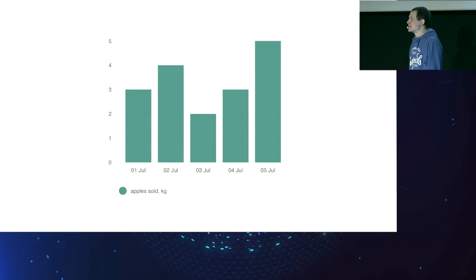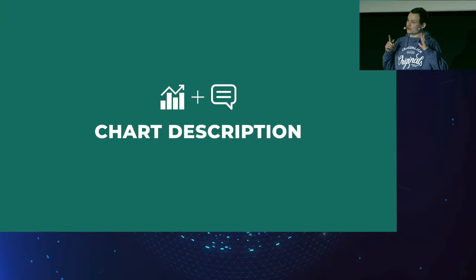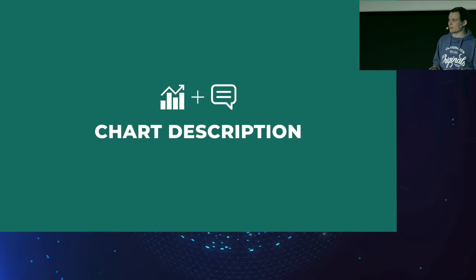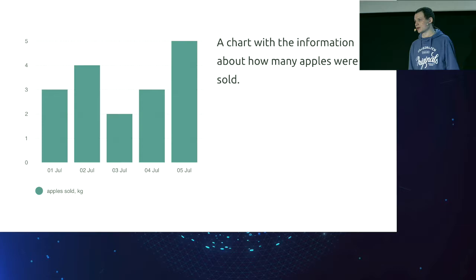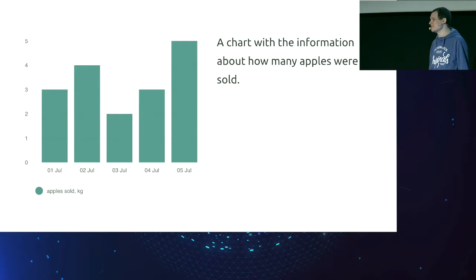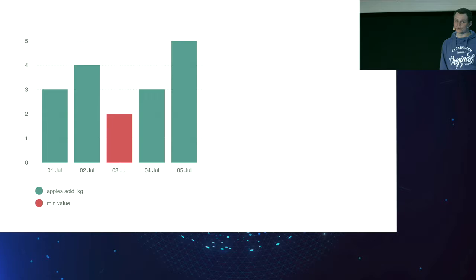Our first statistics will probably look like that — just a chart showing how many kilograms of apples we sold every day in this time period. Now let's try to make this chart accessible. The first way is to consider a chart as an image. We'll add a description to the whole chart, as we do with all other images in our web applications. The simplest description might just say this is a chart showing some statistics with no numbers yet.